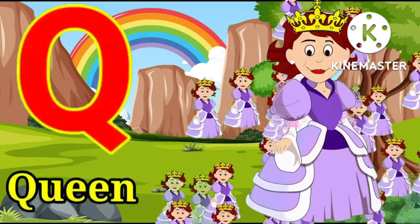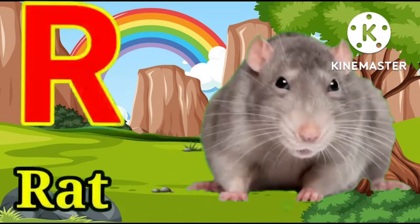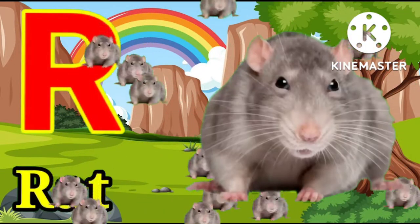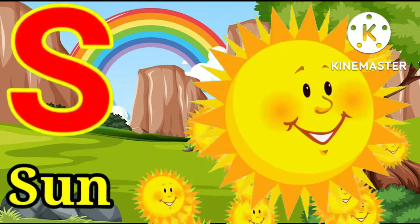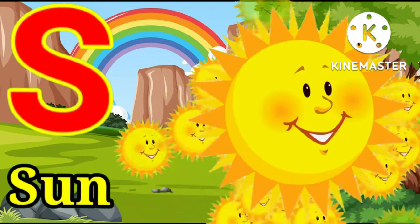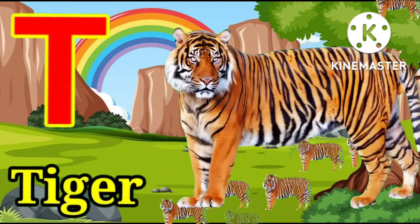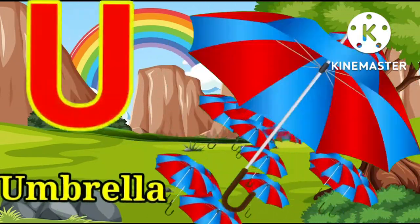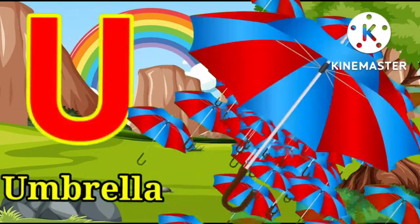Q for queen, R for rat, S for sun, T for tiger, U for umbrella.